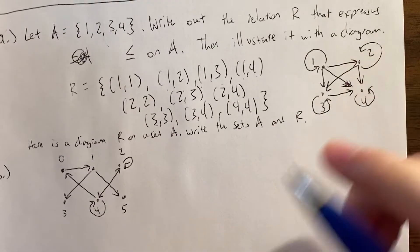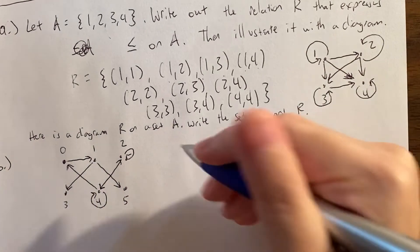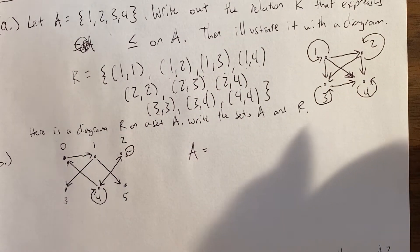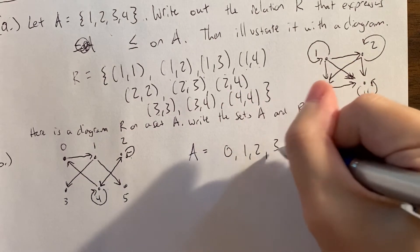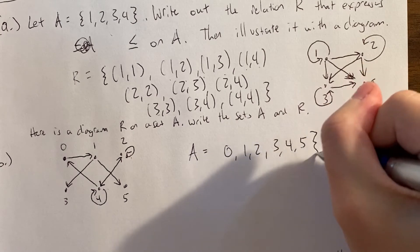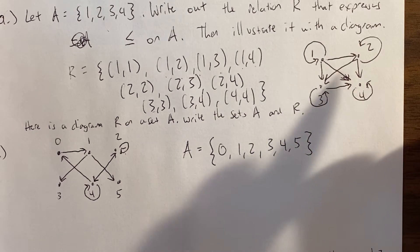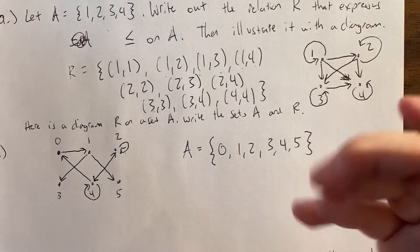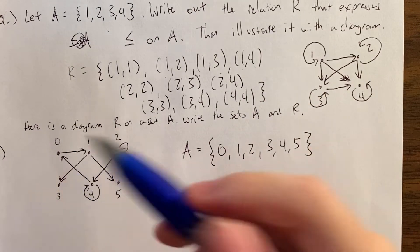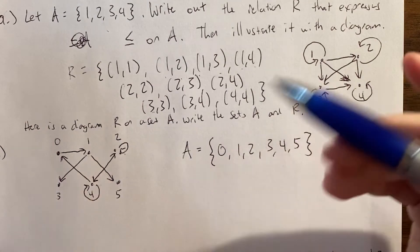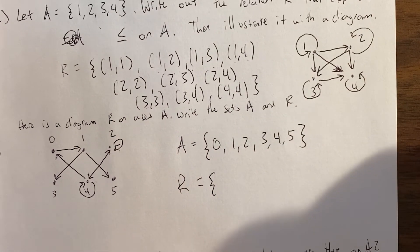Now let's go backwards — starting with a graph or diagram and trying to write out the set A and the relation. The elements of A are just the dots: 0, 1, 2, 3, 4, 5. Then R will consist of coordinate pairs where both coordinates are in A, and a pair (X, Y) is in R if there's an arrow where X is the tail and Y is the head. We just need to account for each of the arrows in the diagram.